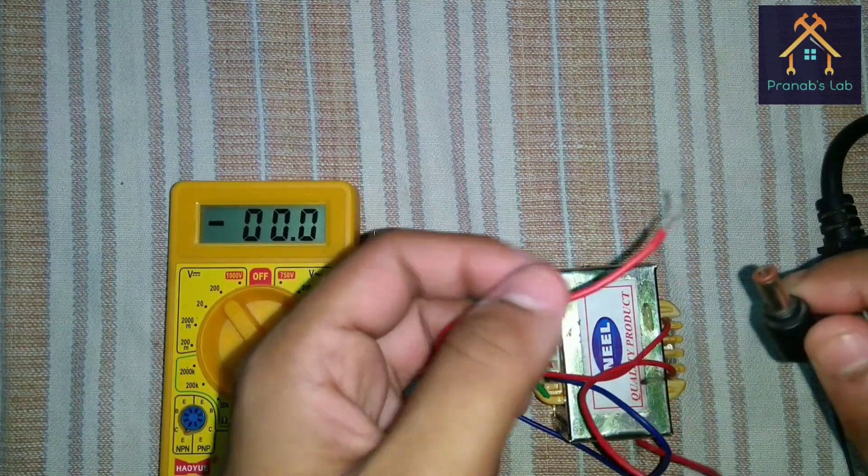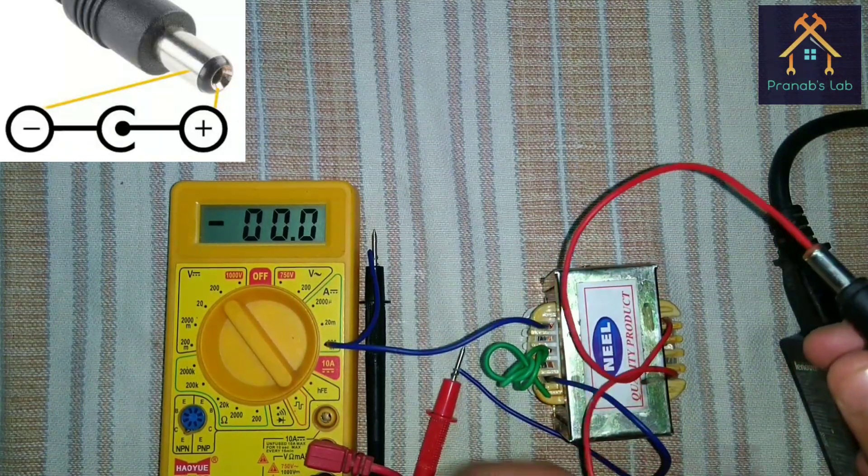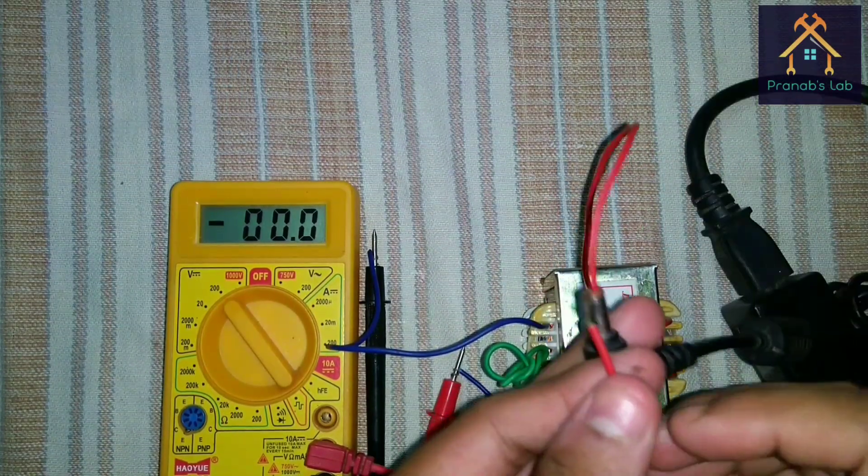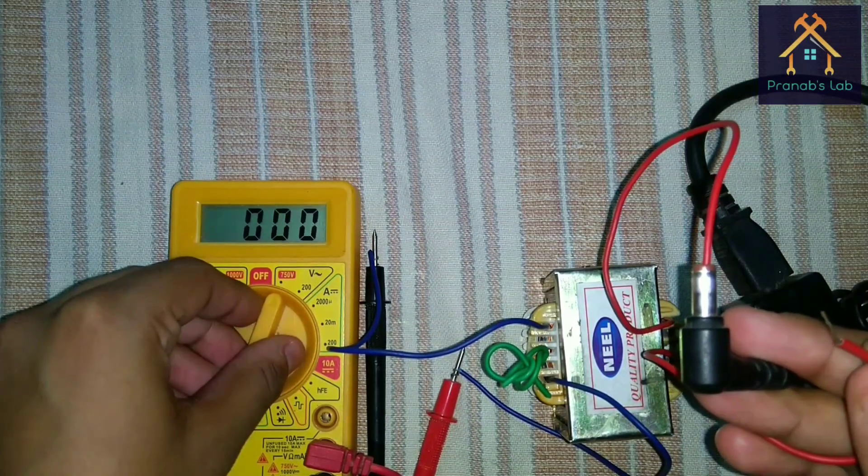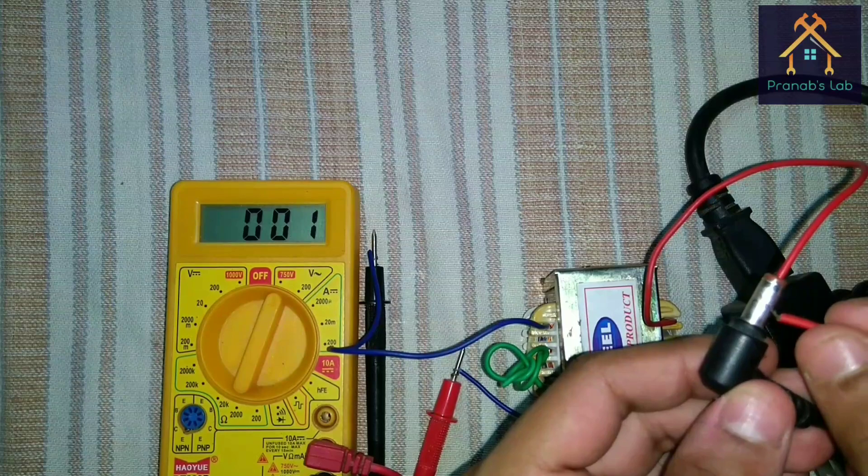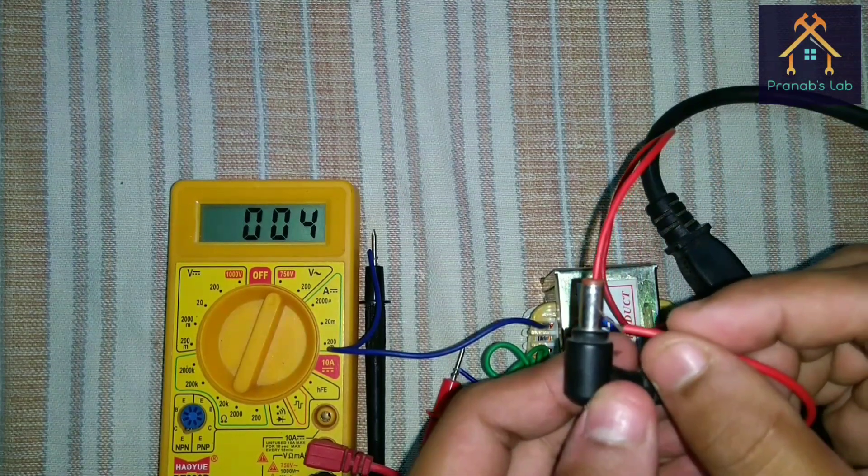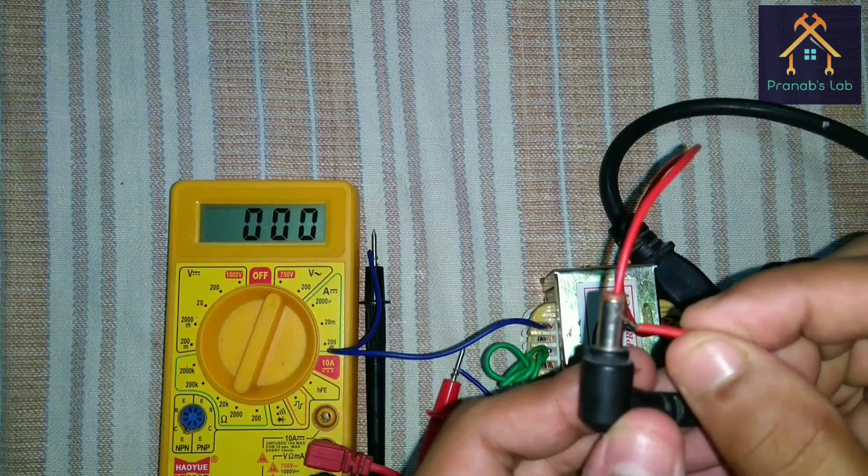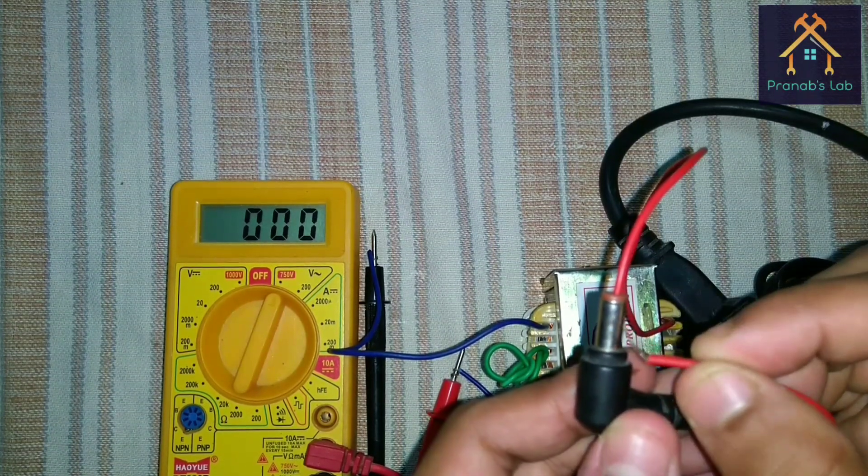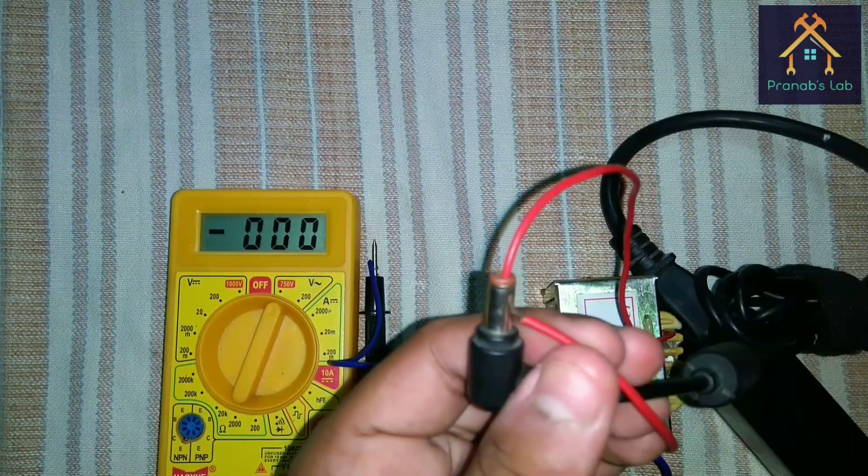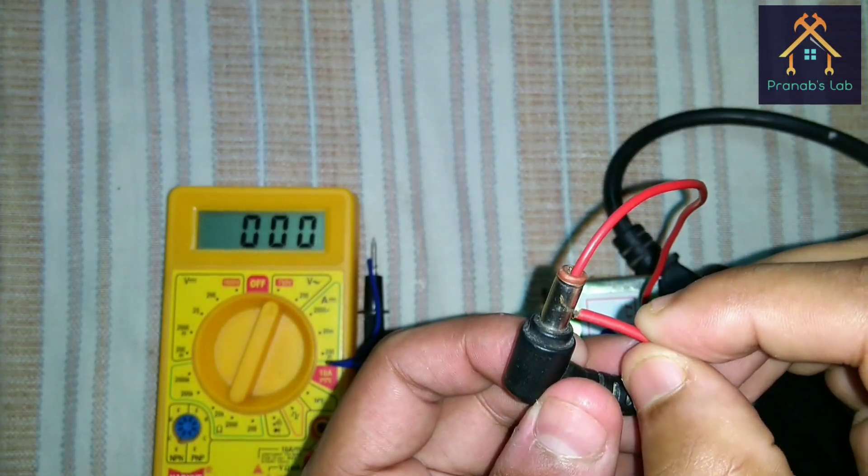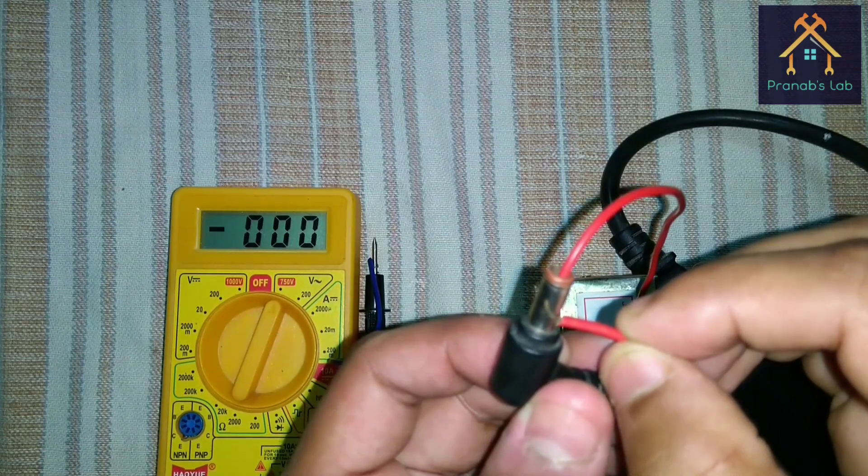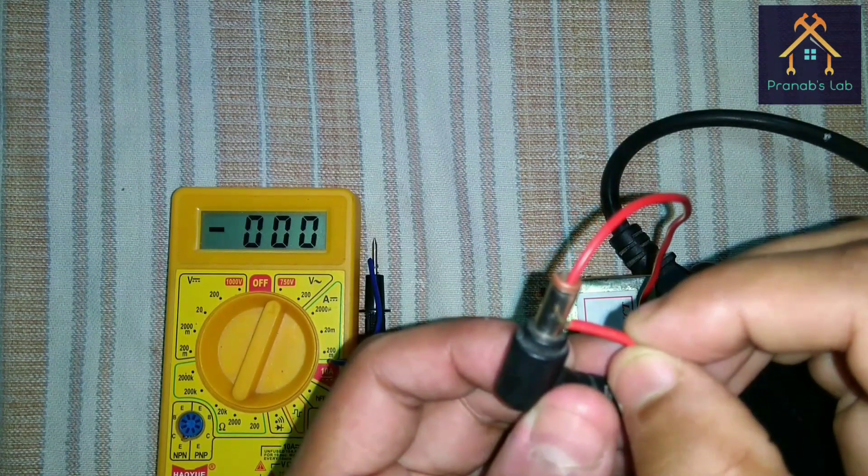Now any one terminal of the primary winding is connected with the supply positive side, and as we have no switch, we will just touch and detach the other terminal of the primary winding. Whenever we touch the negative terminal, you can see a huge amount of voltage is generated. But you can observe whenever we constantly touch the terminal, then no voltage is generated. That means the voltmeter is showing zero. Voltage is produced only when we touch and detach.